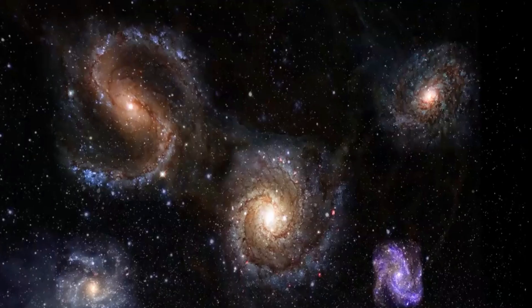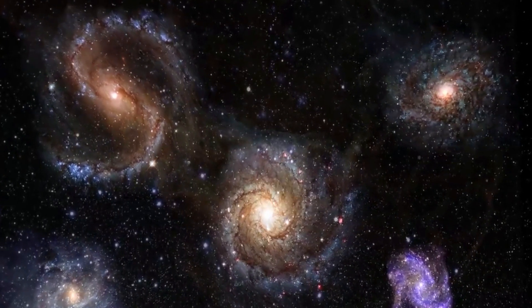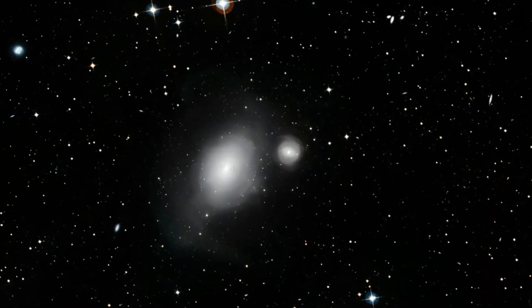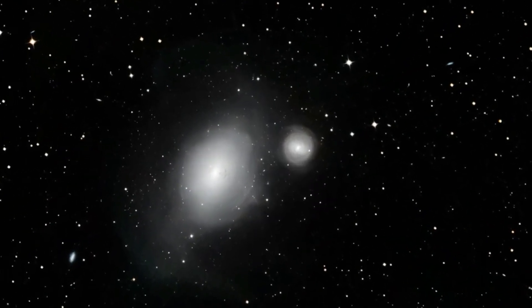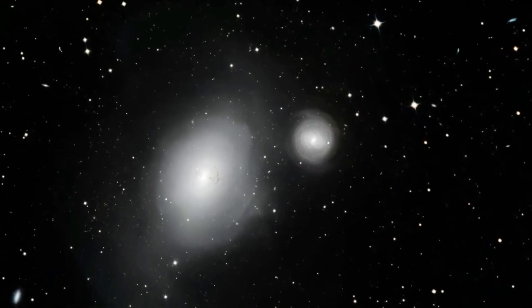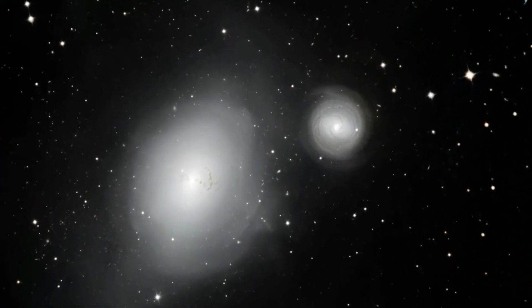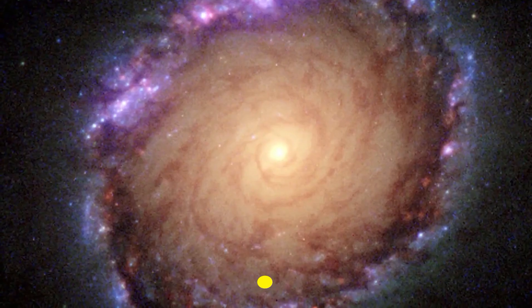The bright points surrounded by diffraction spikes is a star within our own galaxy, while the redder, elongated smear represents a distant galaxy far beyond NGC 1317.